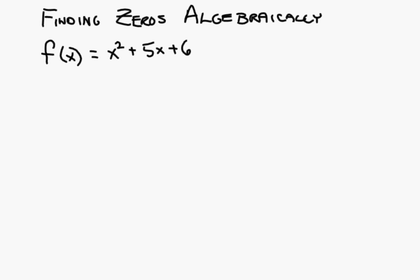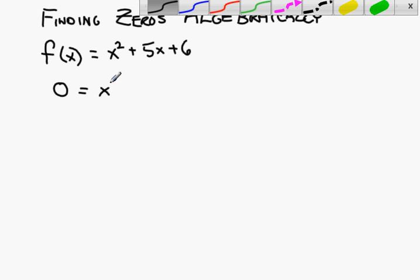Suppose you were asked to find the zeros algebraically in a quadratic function which is presented in standard form. The first thing you would do is understand that when you're looking for the zeros, it's when the value of the function is zero. So the first thing you're going to do is replace f of x with the value of zero. So this would be your first step.